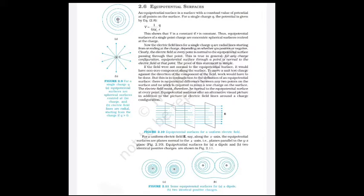The proof is simple: if the field were not normal to the equipotential surface, it would have a non-zero component along the surface. Moving a unit test charge against that component would require work, which contradicts the definition of an equipotential surface — no potential difference exists between any two points on it, so no work is needed. Therefore, E must be normal to the equipotential surface.